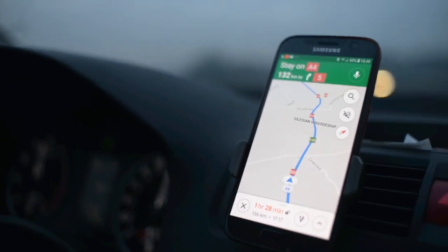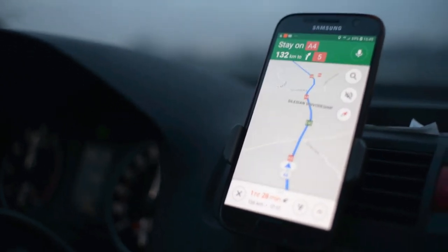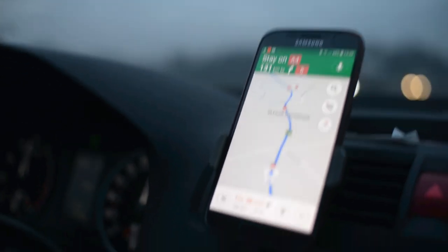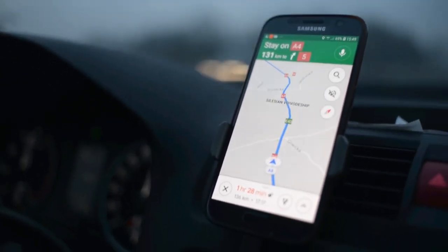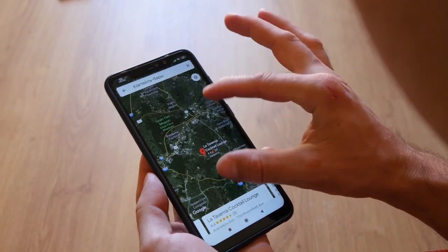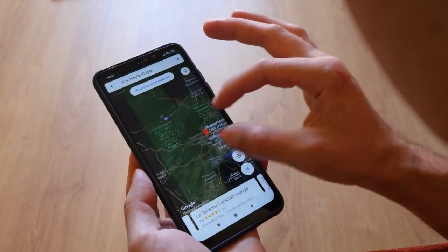If it were not for the theory of relativity, the Global Positioning System, GPS, would not be able to perform its navigation functions, and Google Maps would not be able to accurately determine a precise location.